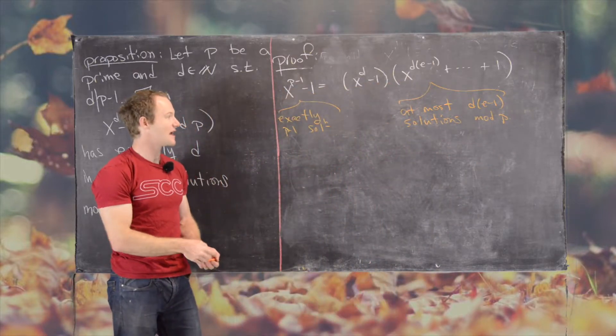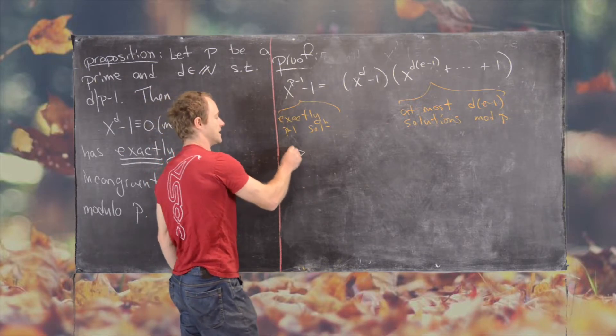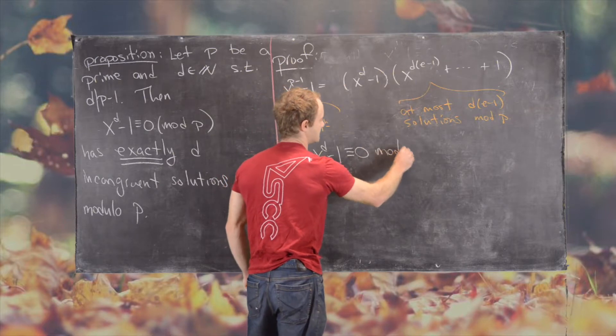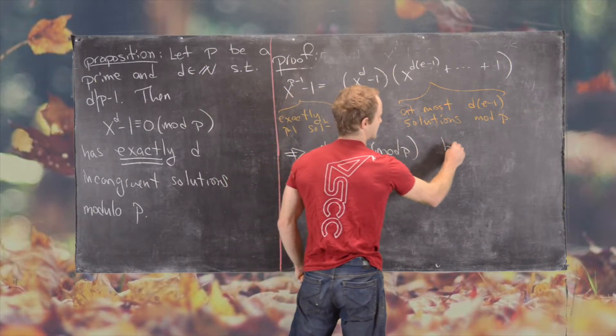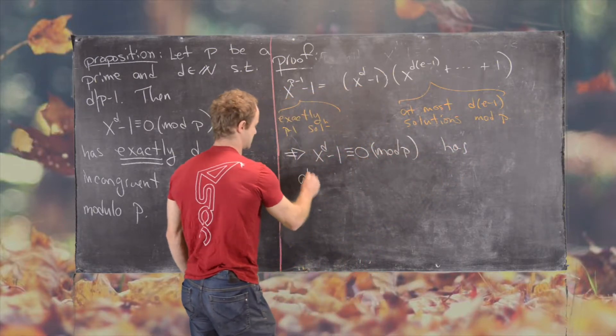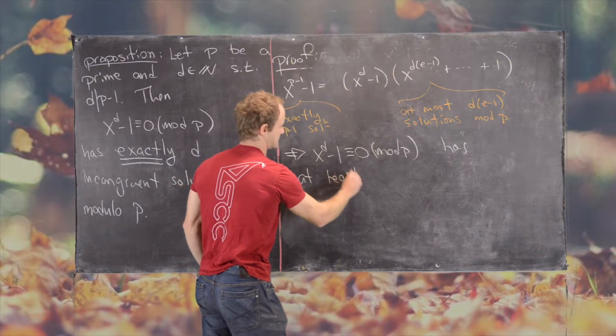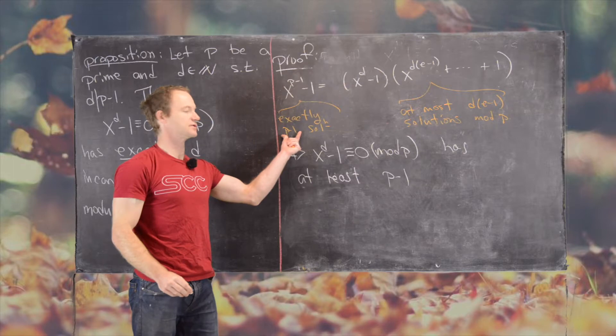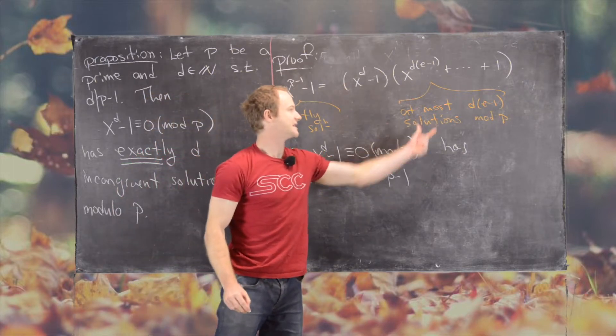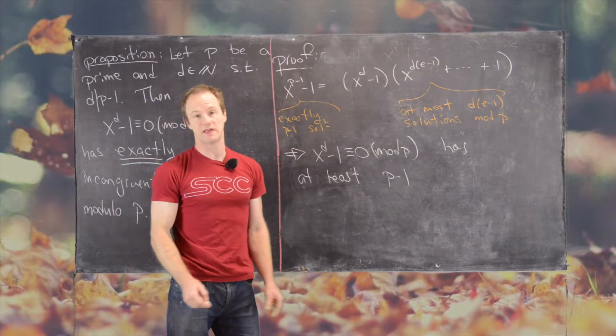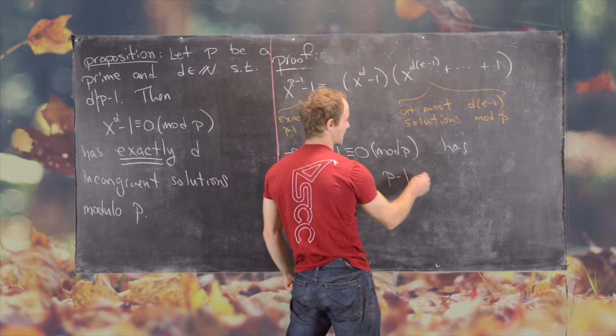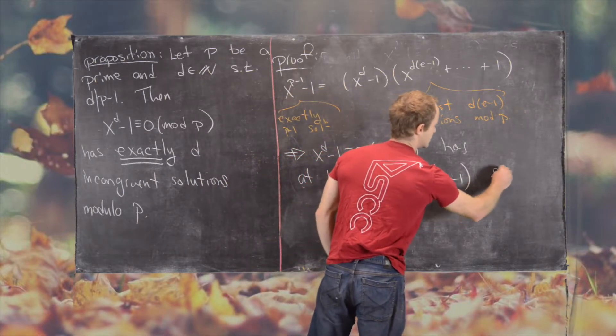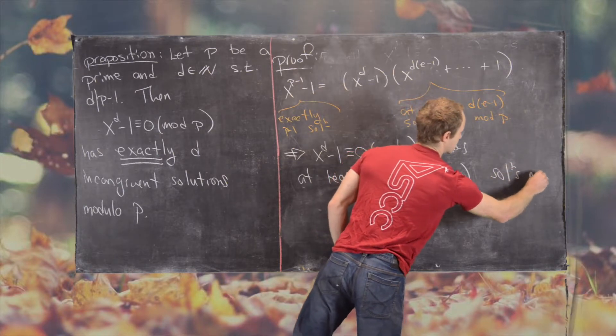So putting this together, that tells us that x to the d minus 1 congruent to 0 mod p has at least p minus 1 solutions. So it has all of these solutions minus at most that many. So we're going to subtract off from here d times e minus 1 solutions mod p.